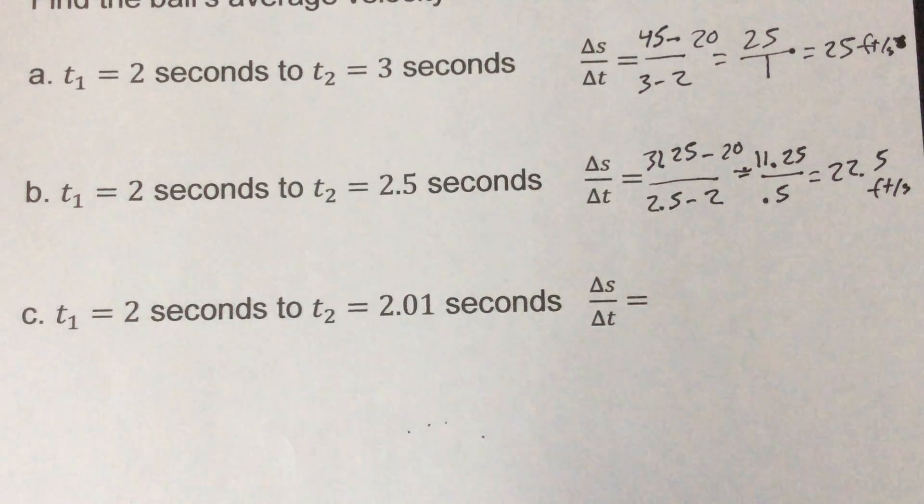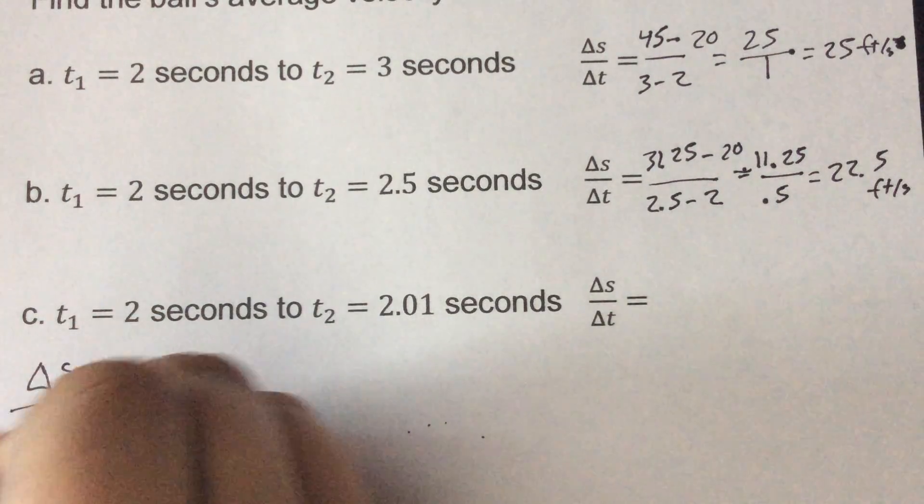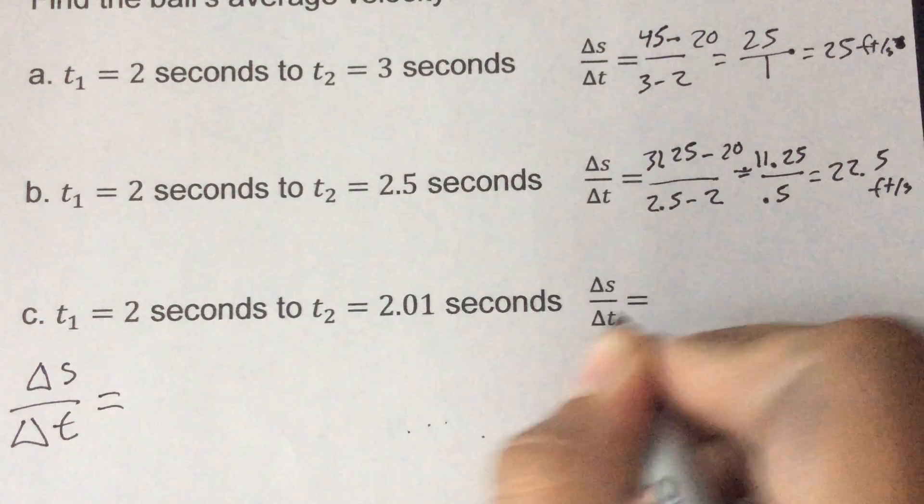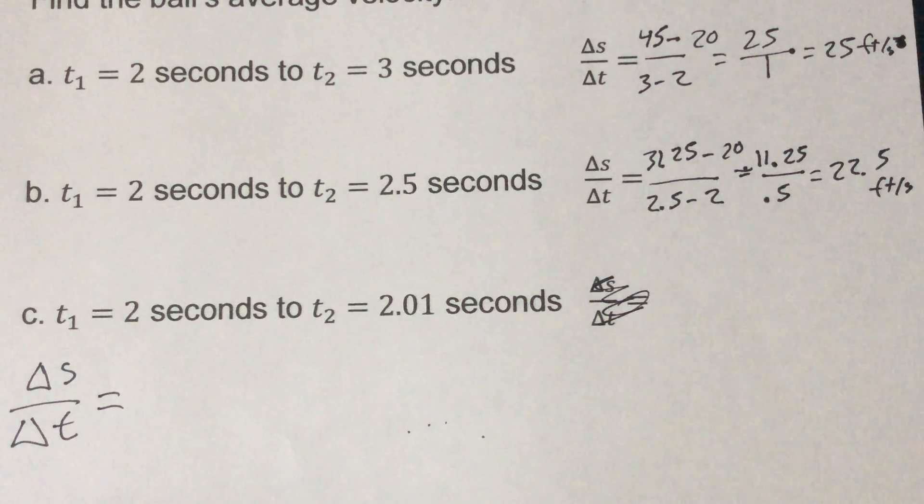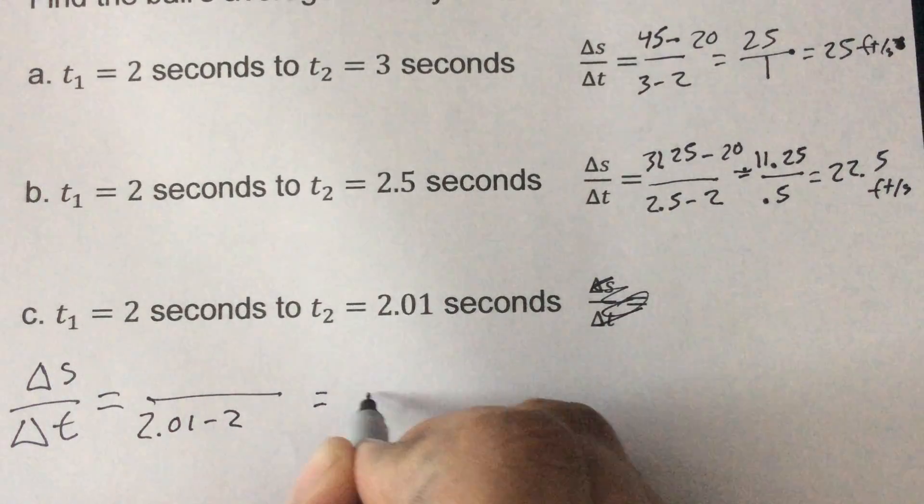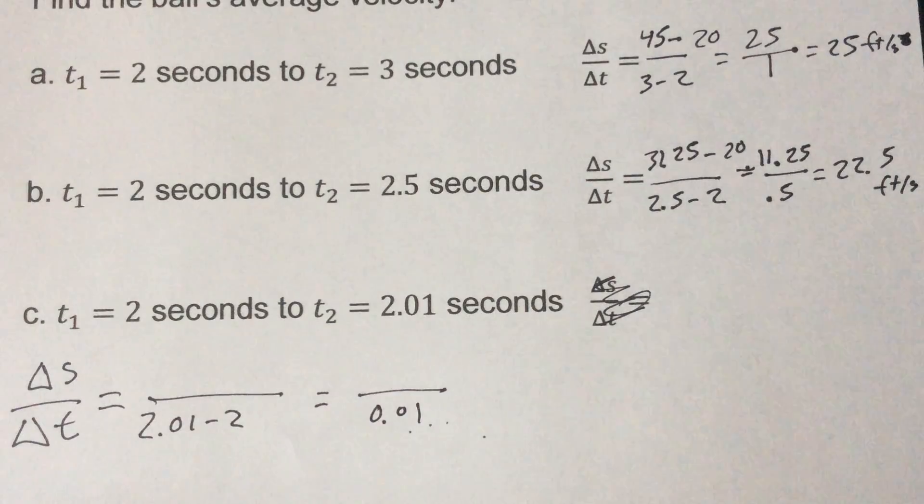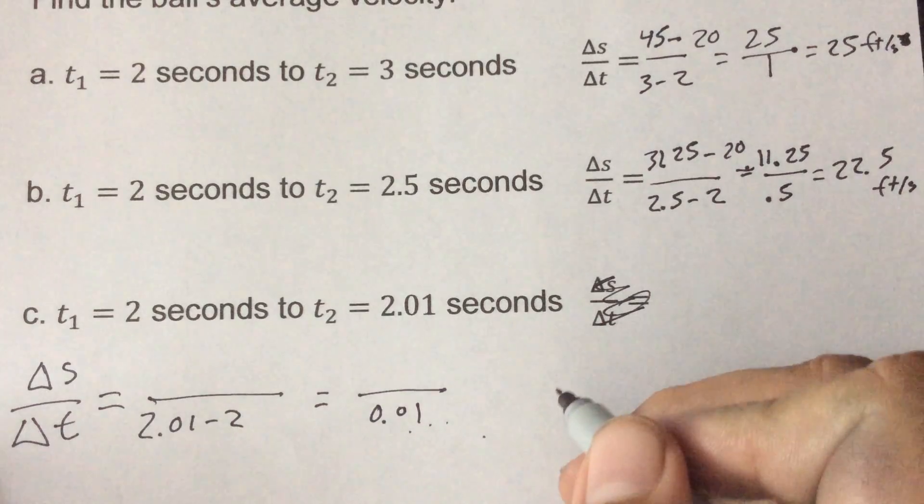Alright, so now we're starting to get pretty small, somewhere right down here on the bottom. So change of s over change of t is what we're dealing with. On top we'll get to in a moment, but the bottom here we have 2.01 minus 2, so the bottom would end up being 0.01. On top now, if I put 2.01 in there I'm going to get...